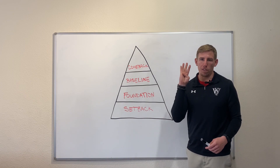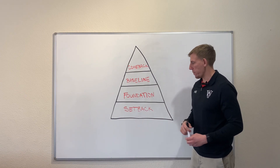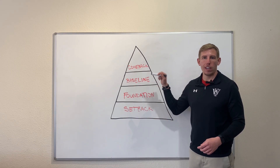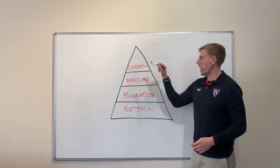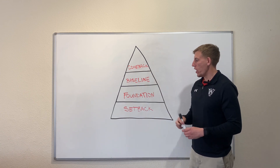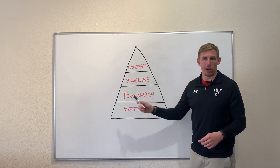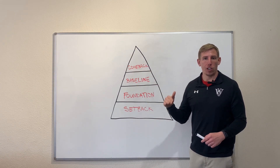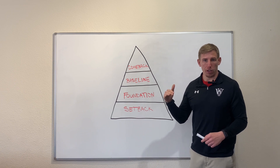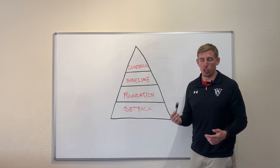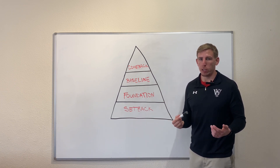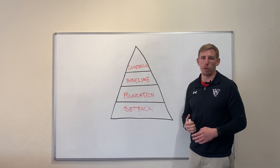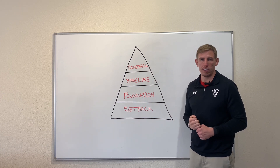At Comeback Performance, there are four phases to rehab: setback, foundation, baseline, and comeback. Notice how it's drawn in a pyramid here, meaning each level builds off the phase below it. The first one has to be established before you can go to the next one, and so on and so forth all the way up to the last stage.